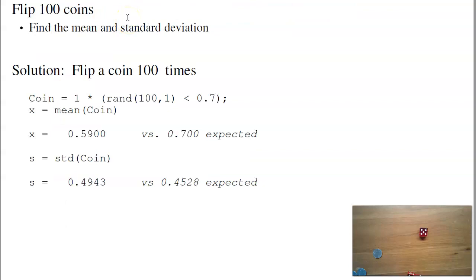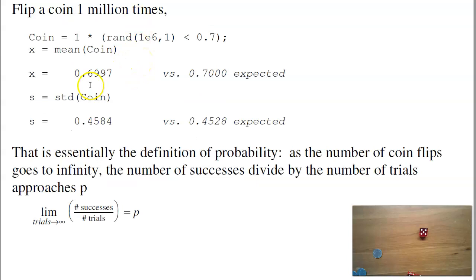If I flip a coin 100 times, I can find the mean and standard deviation. For example, let's take 100 coins. Each has a 70% chance of getting heads. The mean will just be the mean of that. It's supposed to be 0.7. I only got 0.59. The standard deviation is supposed to be 0.4528. That's p times q, square root. I've got 4943. That's only 400 coins. If you only have a limited number of coins, I don't expect my Monte Carlo simulation, my MATLAB simulation to come up exactly the same. If I repeat 1 million times, however, after a million coin tosses, the average is very close to the average. After a million coin tosses, the variance, or standard deviation, is very close. That's essentially the definition for probability. As the number of coin flips goes to infinity, the number of successes approaches the mean. The variance approaches the calculated variance as well.